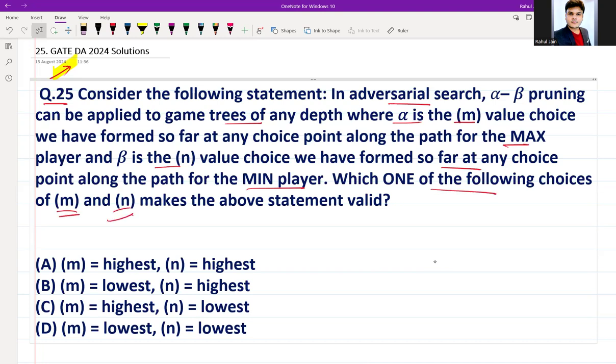Which one of the following choices of m and n makes the above statement valid? So basically this is from alpha-beta pruning in artificial intelligence.